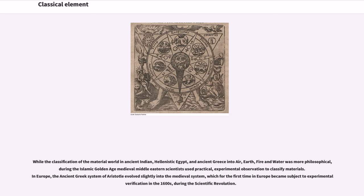While the classification of the material world in ancient India, Hellenistic Egypt, and ancient Greece into air, earth, fire and water was more philosophical, during the Islamic Golden Age medieval Middle Eastern scientists used practical, experimental observation to classify materials. In Europe, the ancient Greek system of Aristotle evolved slightly into the medieval system, which for the first time in Europe became subject to experimental verification in the 1600s, during the scientific revolution.